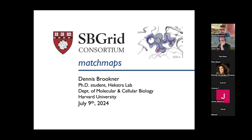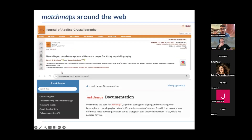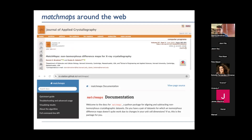Amazing. Thank you for the introduction. Looking forward to presenting to you all today. As Jason said, I'm going to tell you about MatchMaps, which is this tool that I made for making non-isomorphous difference maps. Before I dive in, I'll give my plug for places that you can find MatchMaps around the web. We recently published our paper in the Journal of Applied Crystallography, which is your best place to hear about all of the algorithmic details. We also have pretty extensive online documentation that lives on the Reciprocal Space Station website.